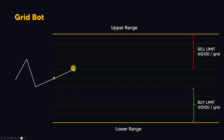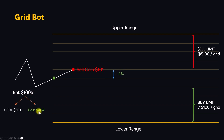Now let's continue the example. The price goes up and reaches the third grid level. What will happen: the bot will sell coin for 101 dollars, earning a profit of one percent, and the balance becomes 1005 dollars. After selling, the coin adds up to USDT becoming 601 dollars, and the remaining coin will be 404 dollars because it increased by one percent. If you sum up 601 plus 404, it becomes 1005 dollars.